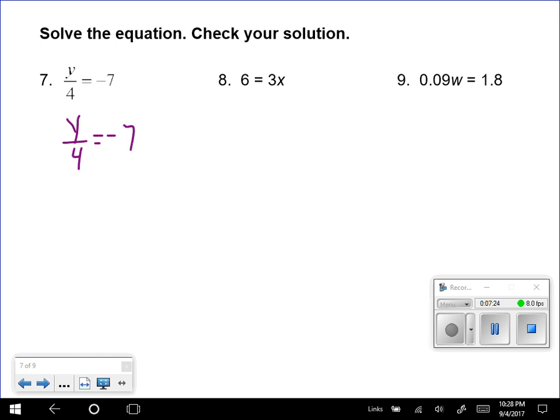So if we want to get Y alone, we're going to use that inverse operation we talked about. That's a very important term. The inverse of division is multiplication. So I'm going to multiply by 4.